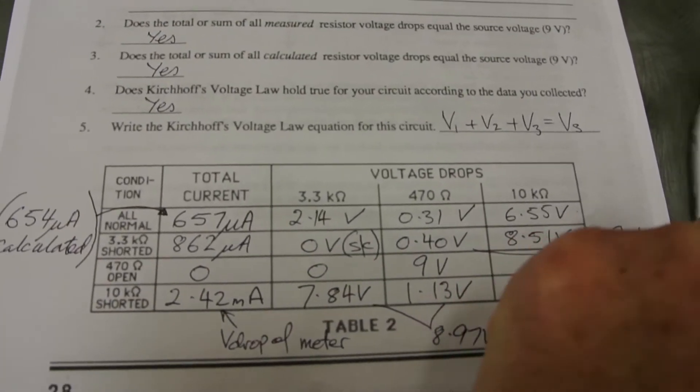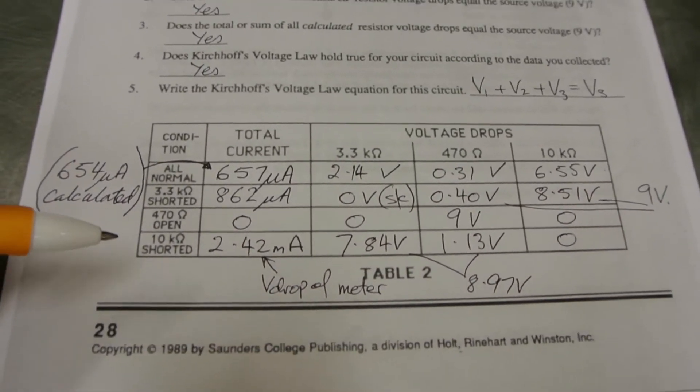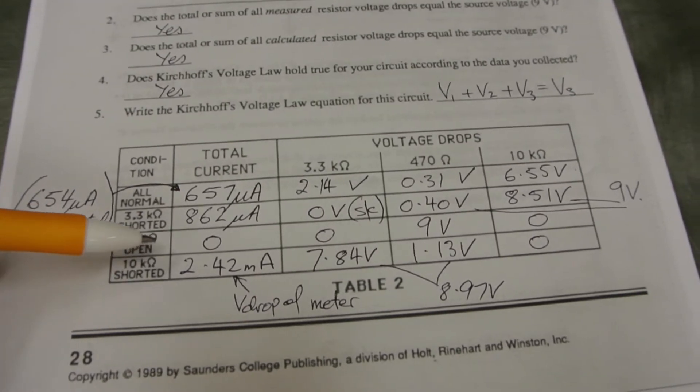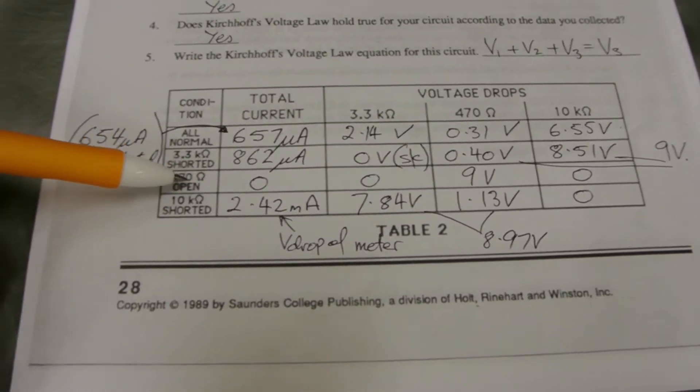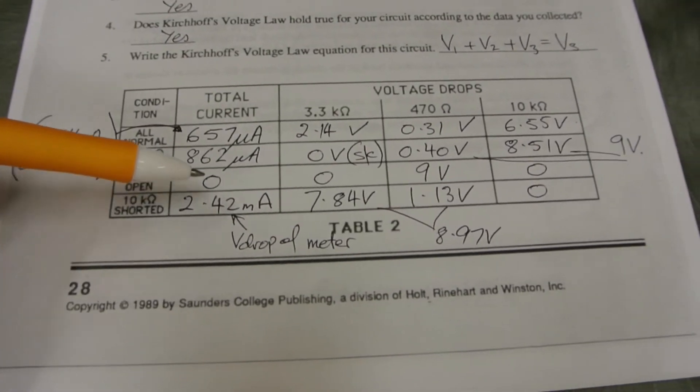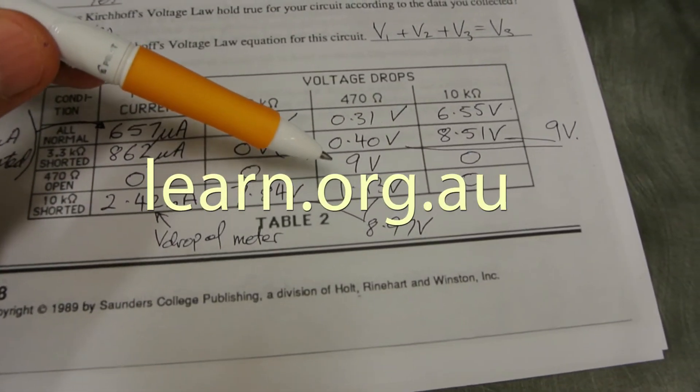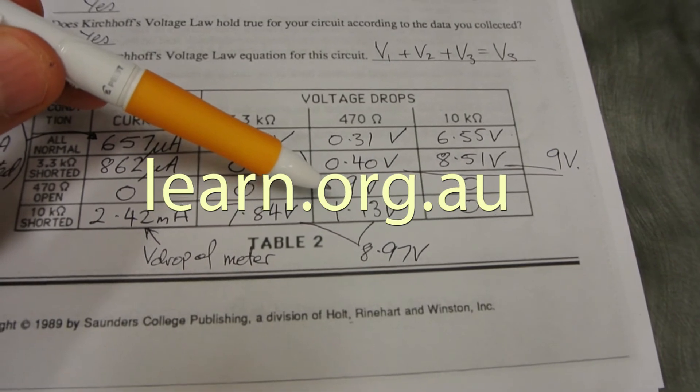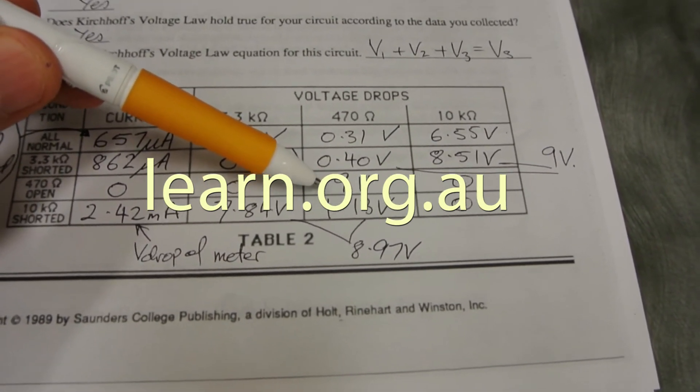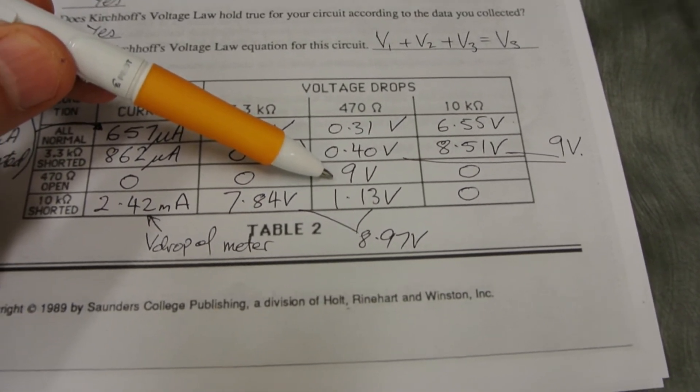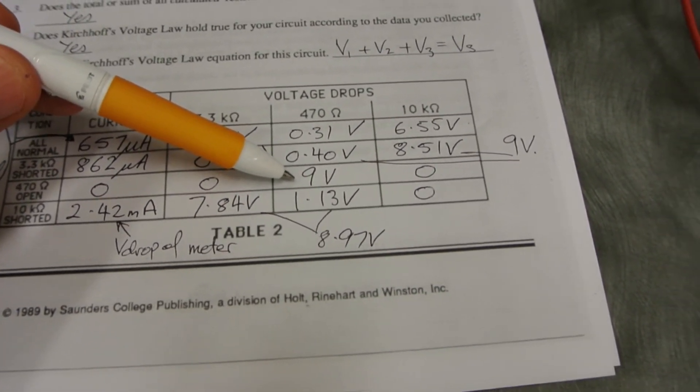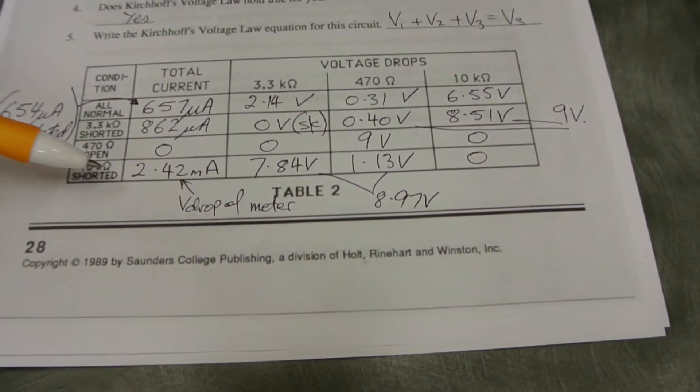We've completed the table. And as expected, we found that with the open circuit 470 ohm resistor, we did in fact get the full supply voltage across the 470 ohm resistor. That was the one that was open circuit.